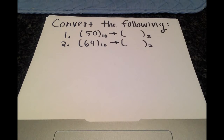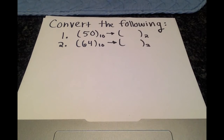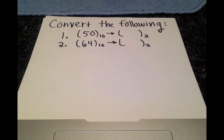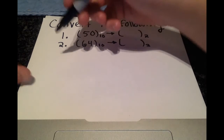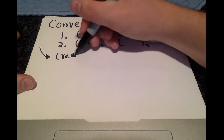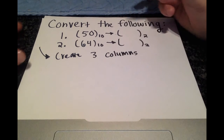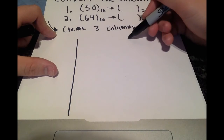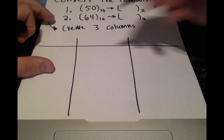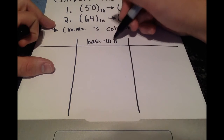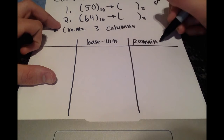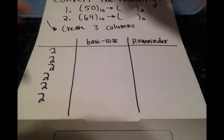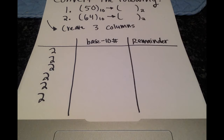Hello, how are you doing? We're going to be doing some more base conversions — converting base 10 numbers to base 2 numbers, or binary. What I like to do is start off by creating three columns. This may not be the traditional way you see this done, but I think it is very helpful.